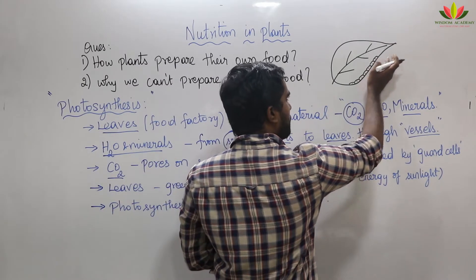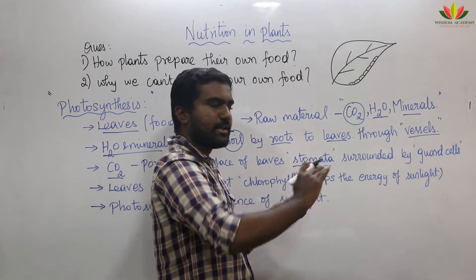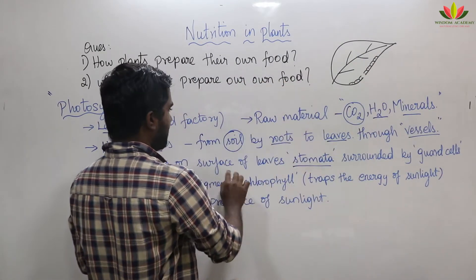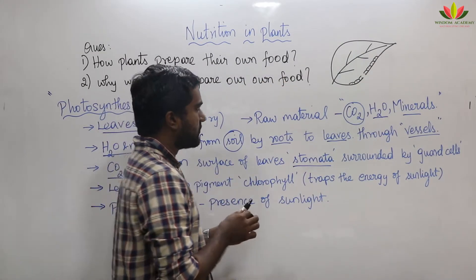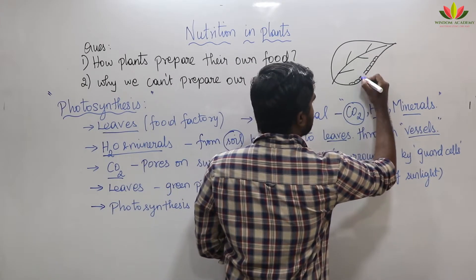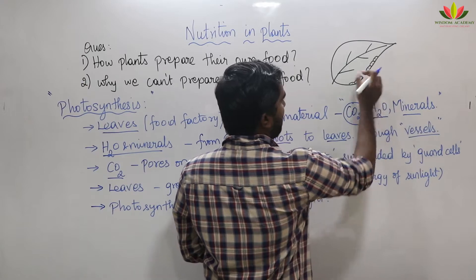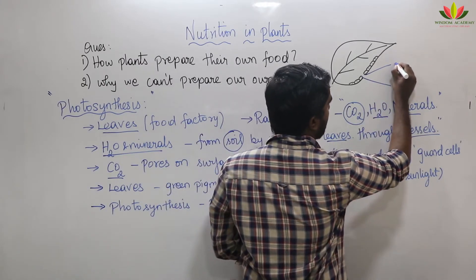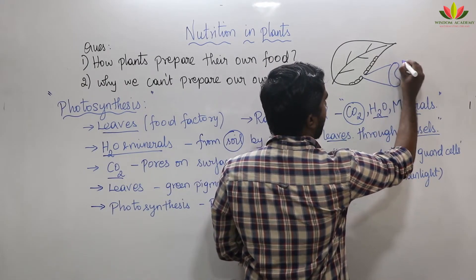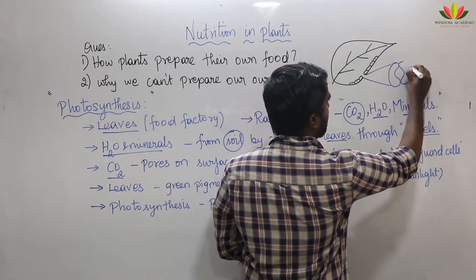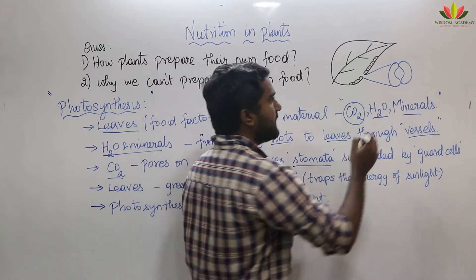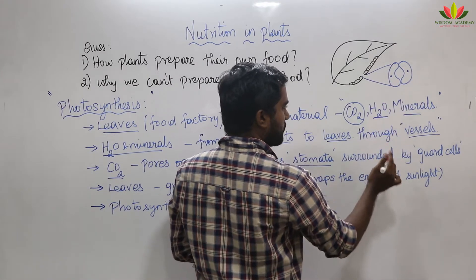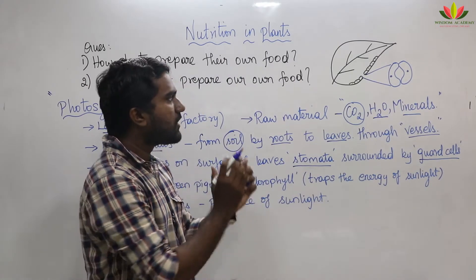In the epidermis, the cells are arranged in a single sheet. Between two cells there is a small gap. In that gap there are two kidney-shaped cells. These are not regular epidermis cells — we call them guard cells. The small hole between the two guard cells is called the stoma, or stomata.